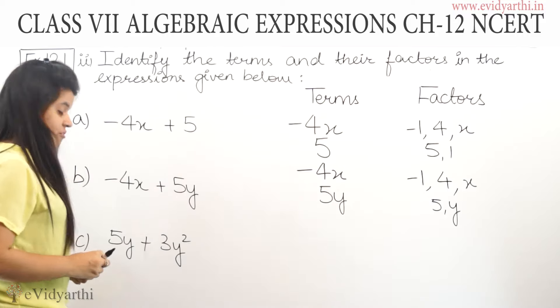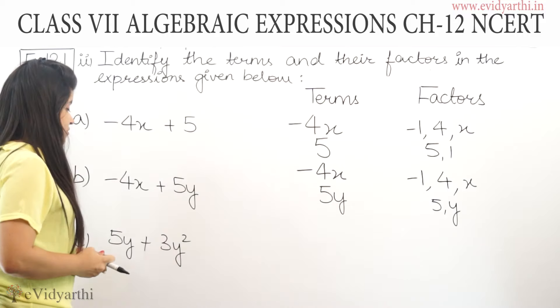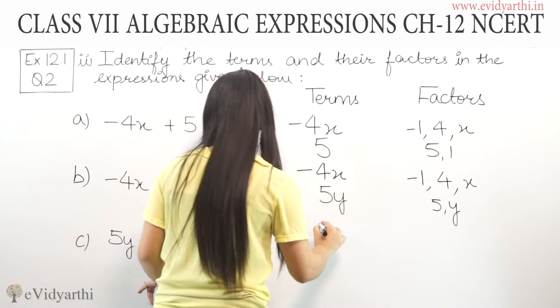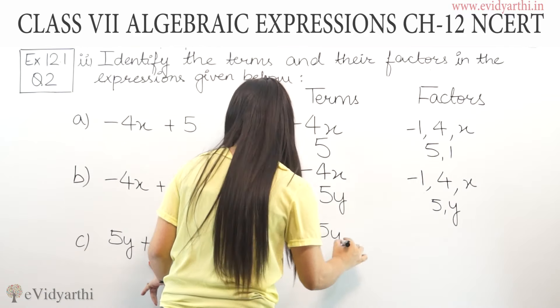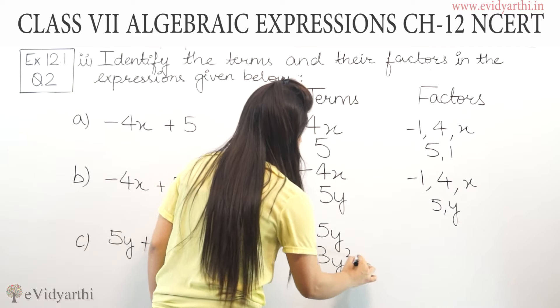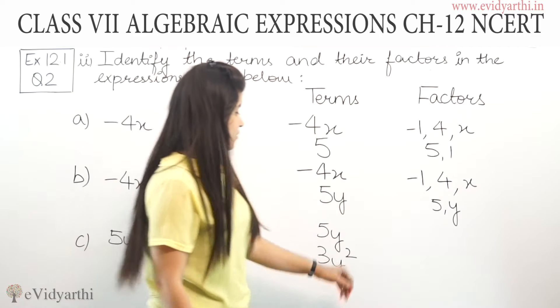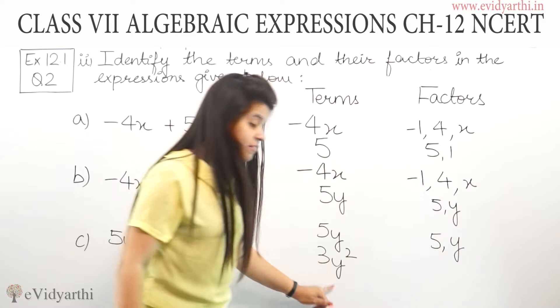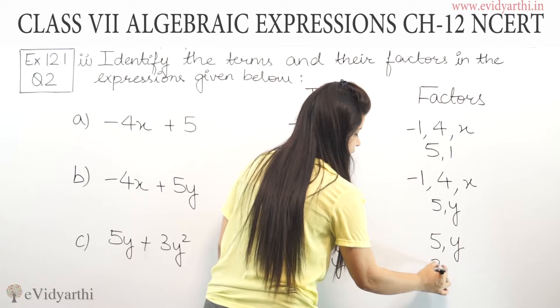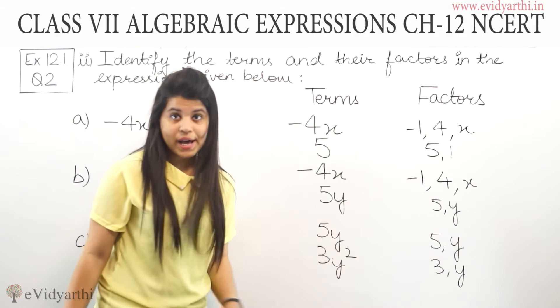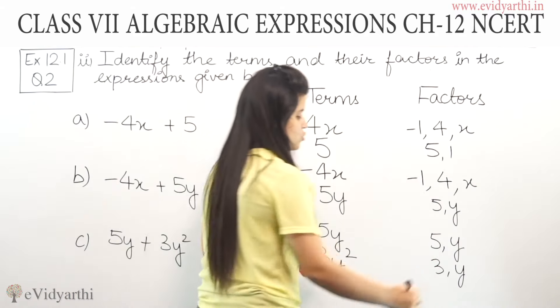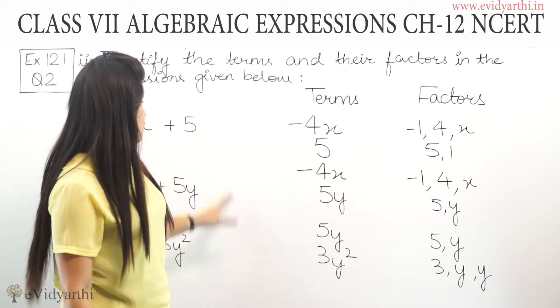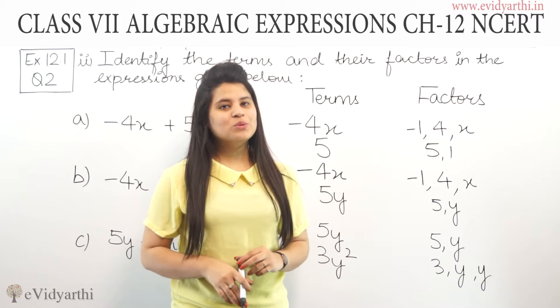For part c, we have 5y + 3y². Again, there are two terms: 5y and 3y². The factors of 5y are 5 and y. For 3y², the factors are 3, and y² means y appears twice, so y and y. This was parts a, b, and c. Now, let's come to the other parts.